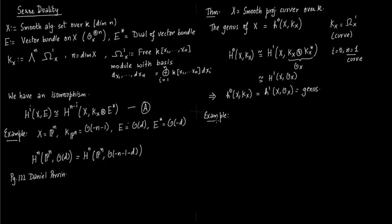Now we want to do an example that P1 has genus 0. Okay, so what is kP1? kP1 you know is O(-2). So O(-2).